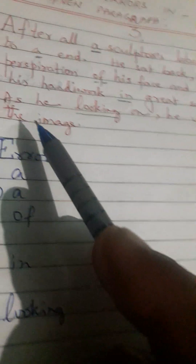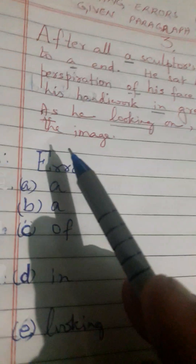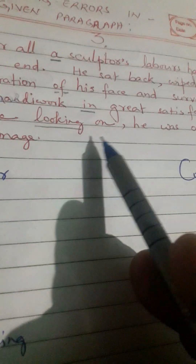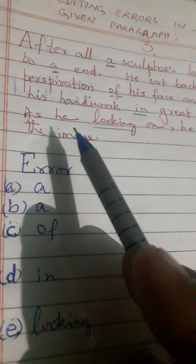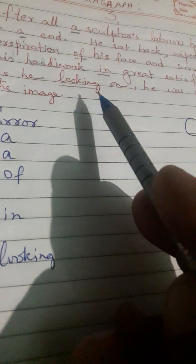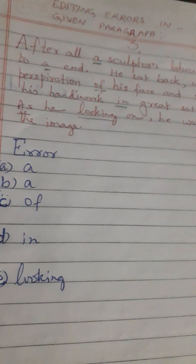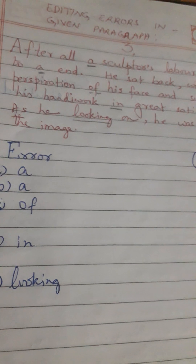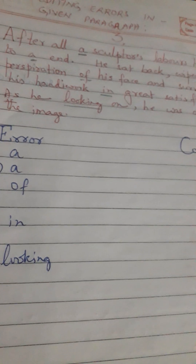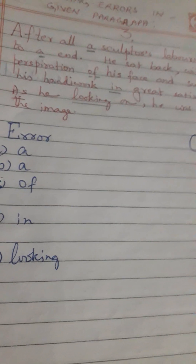The last error is: 'as he looking on, he was overwhelmed by the image.' Here, 'looking' must be replaced by 'looked.' So write 'looking' in the error column and 'looked' in the correction column. In this way, you have to answer the given paragraph in the mode of editing errors. Keep this in mind and edit your given paragraph accordingly.